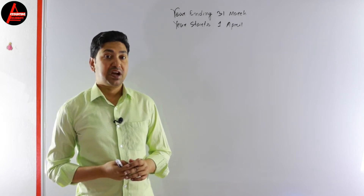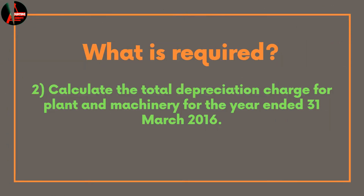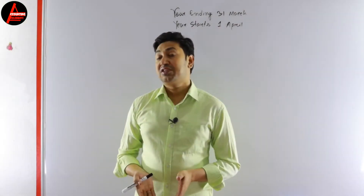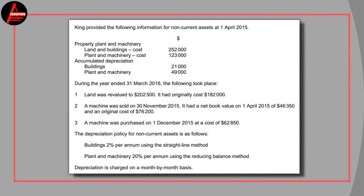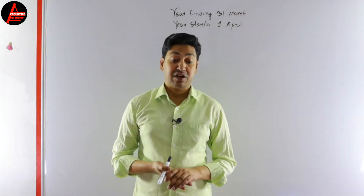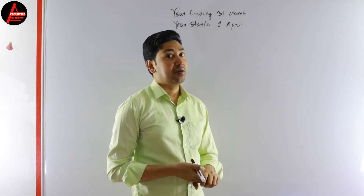What is our requirement in this question? We have two requirements: first, we have to calculate the depreciation of building; second, we have to calculate the depreciation of plant and machinery. For these two different assets we have to apply two different methods. The depreciation policy for non-current assets is as follows: building 2% per annum using the straight-line method, and plant and machinery 20% per annum using the reducing balance method.